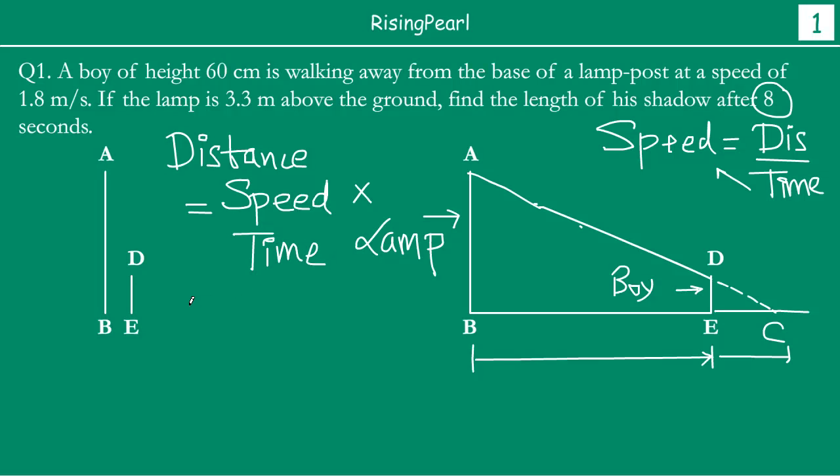So what we have. We have the height AB. We have the height of the boy. We know this distance because if you multiply the speed and time, we have the speed given to us and time. So we can find out this length. In triangle ABC, we have BE. We can find out the distance traveled by the boy in 8 seconds. We have AB height of the lamppost. We have DE height of the boy. And we need to find out EC.